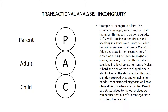For an example of incongruity, we can return to Claire, the company manager, who is talking to another staff member. Claire says, 'This needs to be done quickly, okay,' while looking directly at her and speaking in a level voice. From her adult behavior and words, it seems Claire's adult ego state is her executive self. However, looking more closely, we can see she may be experiencing a different ego state as her real self. Using behavioral diagnosis, we can see that though she is speaking in a level voice, there is a hard edge to her tone, her words are clipped, and she is looking at the staff member through slightly narrowed eyes while wringing her hands. From historical diagnosis, we know that Claire does this when she is in her parent ego state, so we can deduce that Claire's parent ego state is her real self.